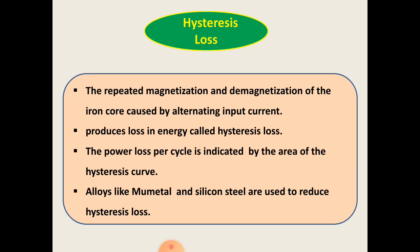Then, hysteresis losses. The repeated magnetization and demagnetization of the iron core caused by the alternating input current results in the loss of energy. The power loss per cycle is indicated by the area of the hysteresis curve. The hysteresis loss is appreciable for radio frequency transformers.